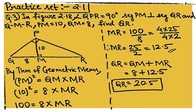Next, in figure 2.18, angle QPR is 90 degrees. From the 90-degree vertex P, a perpendicular PM is drawn towards the hypotenuse QR. PM is 10, QM is 8. We need to find QR — the length of the hypotenuse of triangle QPR.